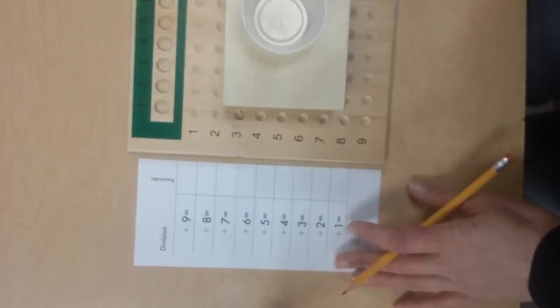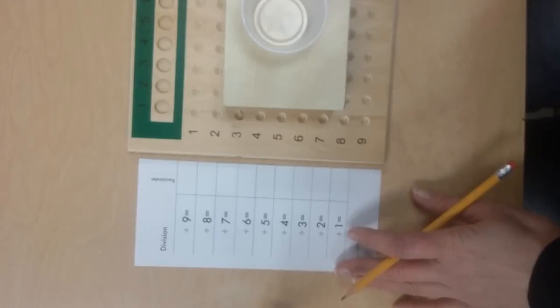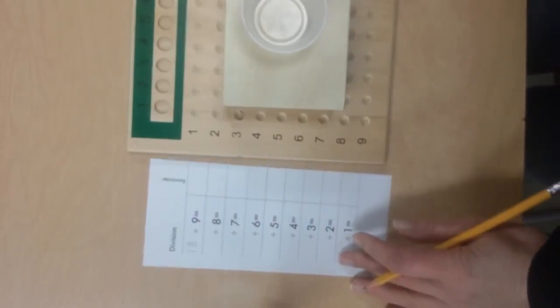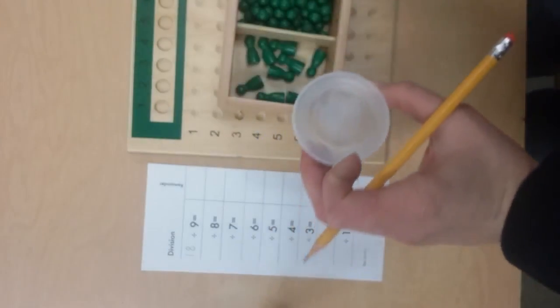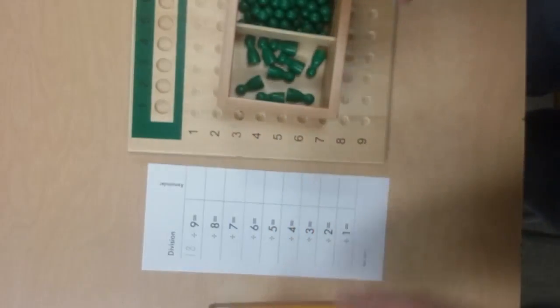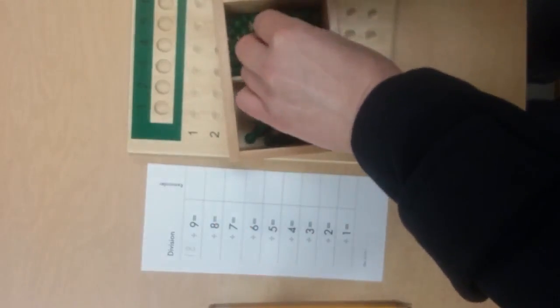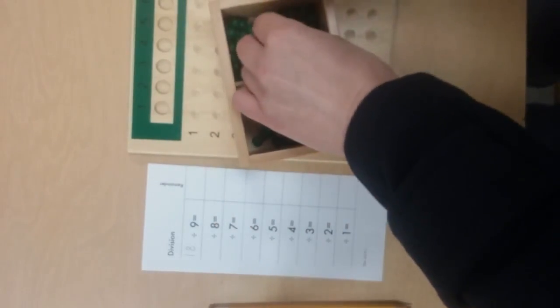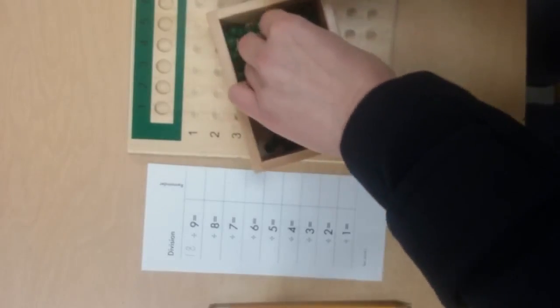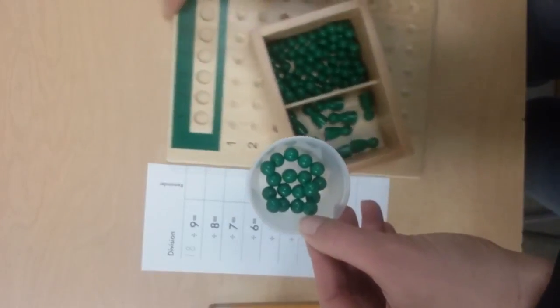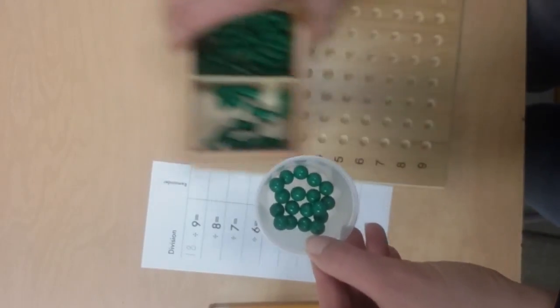Then choose any dividend—that's the number that will go here. For this one, we're going to go with 18. The first step is to count out 18 of these beads. Once your students have them, have them place the beads in a separate container.